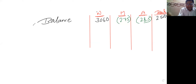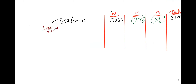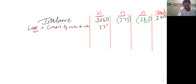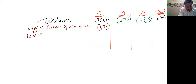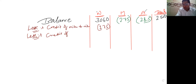तो directly इधर क्या करने का — they go less. Credit adjust कर रहे हो, so credit of M: 275 less कर दो N में से। यह M for Meetu है, N for Neetu है, और A for Anand है। Credit of Anand भी adjust हो जाएगा Neetu को — credit of Anand to Neetu: 285।